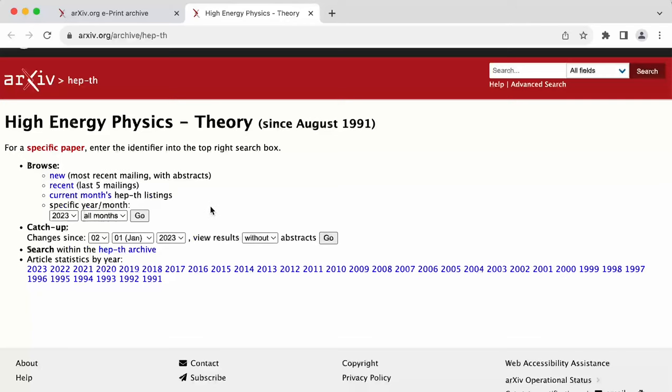And let's say we don't want to look at all of them. We want to see what's going on in recent months. So there are a few different ways we can do that. There is a browse option, there is a catch up option, and there's a search option.